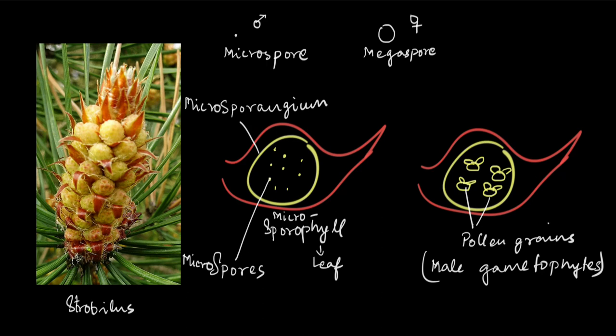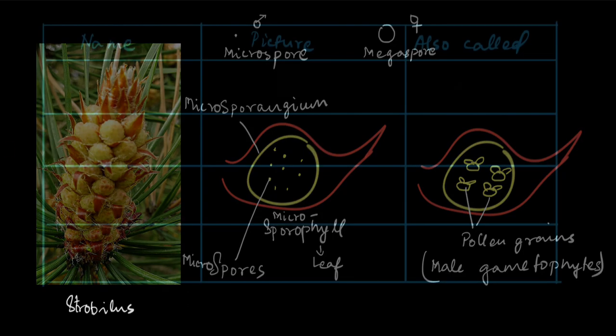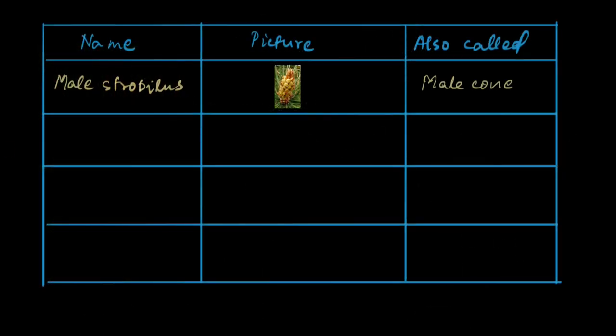This is pretty much it about the male cone or the male strobilus in gymnosperms. Let's summarize what we've seen so far. The male strobilus is also called the male cone, and inside the male strobilus or cone there are these smaller structures, each of which is a microsporophyll.